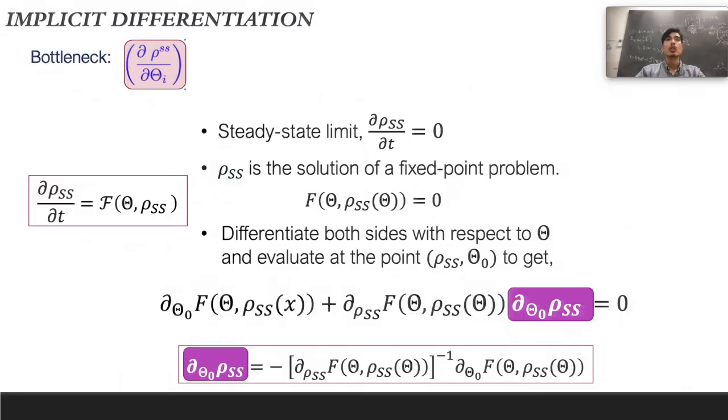To solve this, we propose an alternative method called implicit differentiation, which allows to compute the change of the steady state with respect to any parameter of our model without dependency on the numerical solver. The idea is we know the Liouvillian in the case of open quantum systems evaluated at the steady state is zero, so we could actually use this as a fixed point problem.